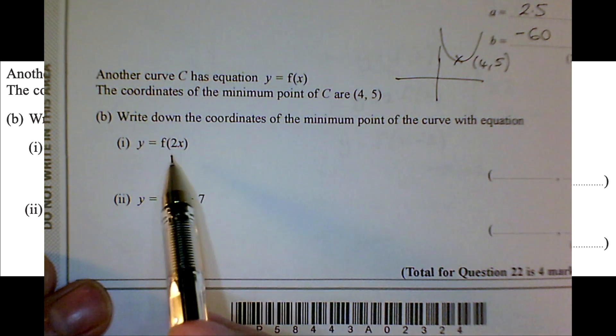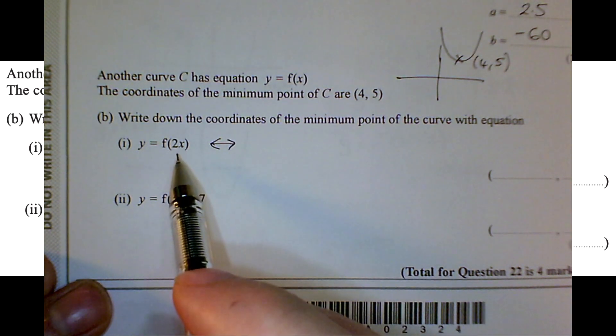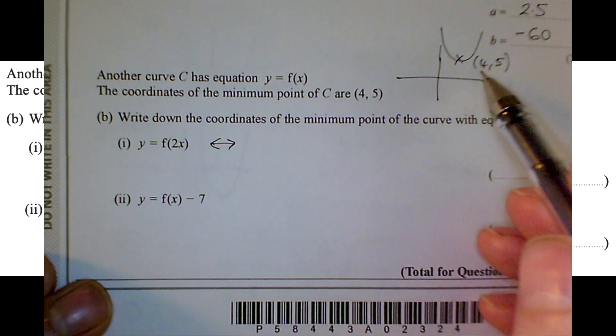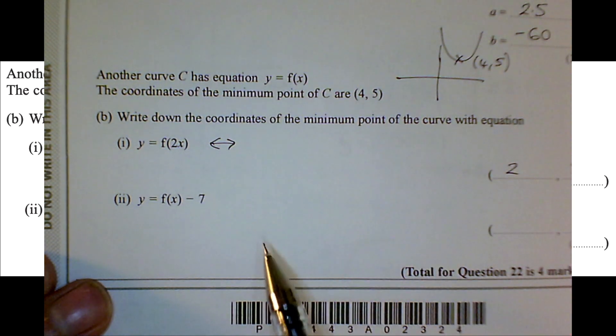Now, if I want to have f of 2x, now that 2 is inside the bracket, so it's a left-right change. And it's going to affect the x-coordinate only, not the y-coordinate. It's going to be halved. It's the reciprocal of that number. So it's going to be 2 and 5.